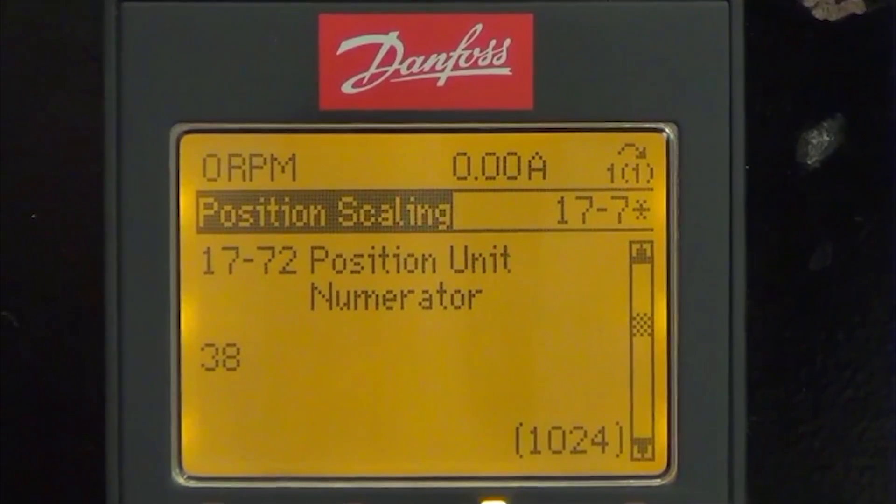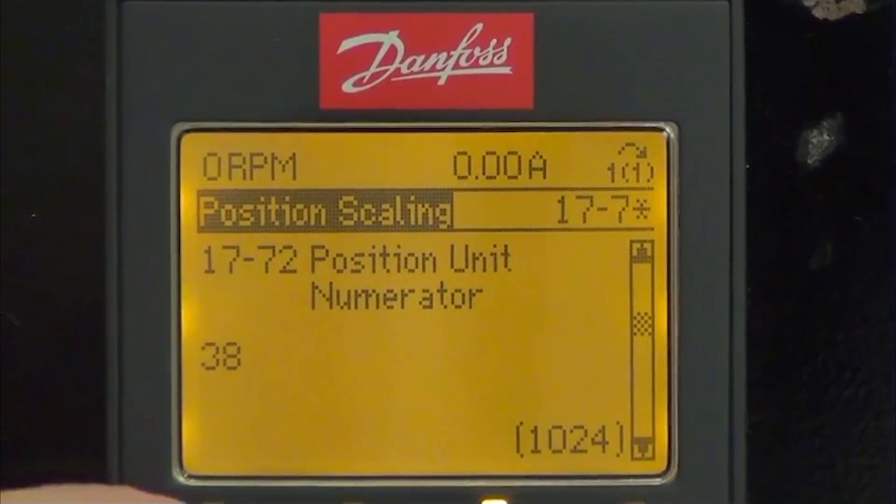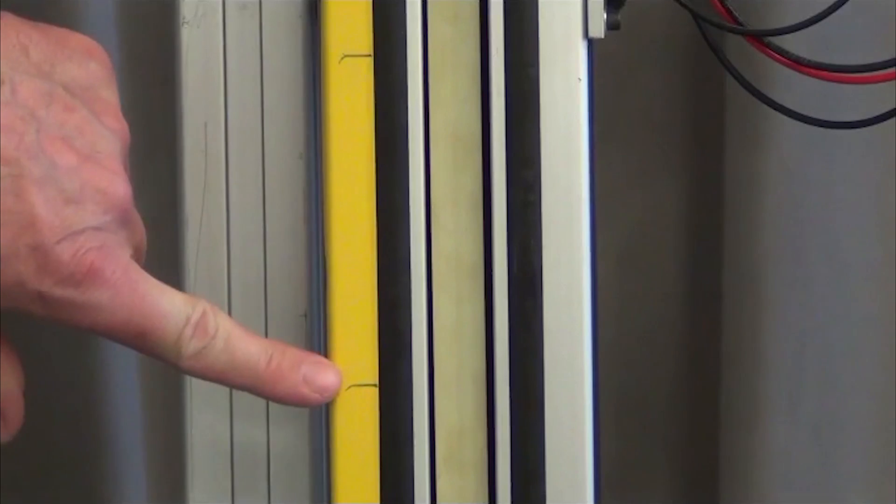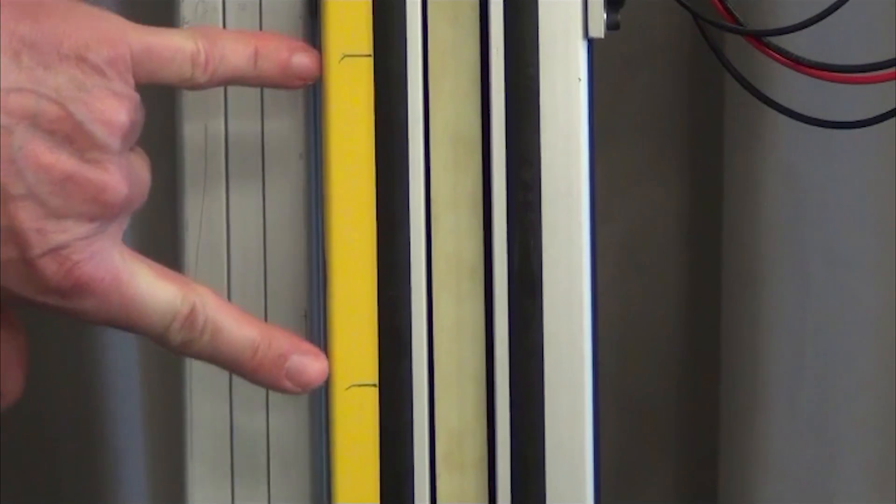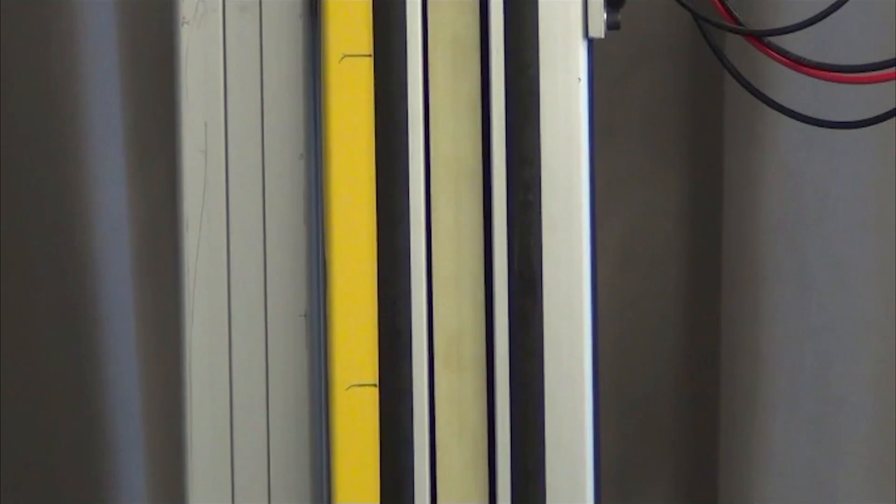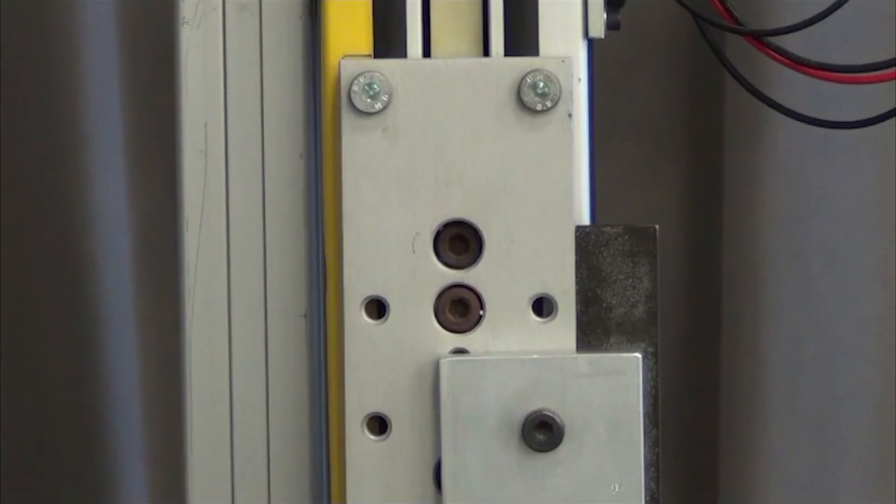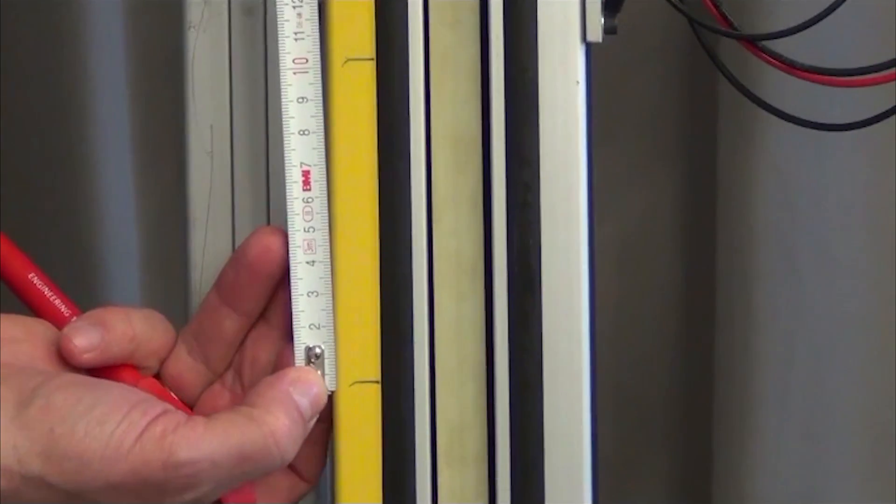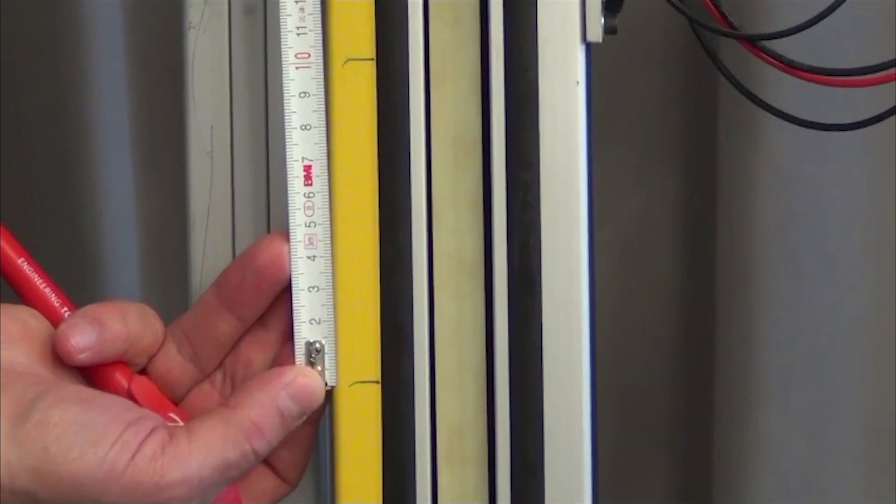So now we have our scaling in place and positioning can be done in millimeters. I have now marked position zero here and then 100 millimeters. I will first go to zero and then 100 millimeters on the display here. And I can go back to zero. And then we can check the tape measure if we really have 100 millimeters. And that is spot on. So our scaling is correct.